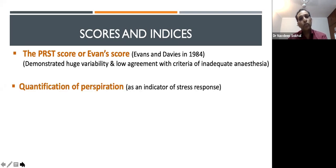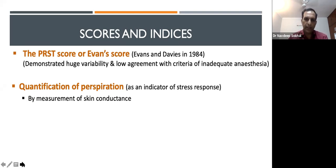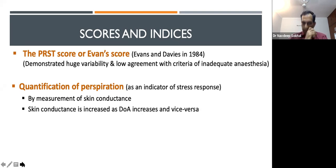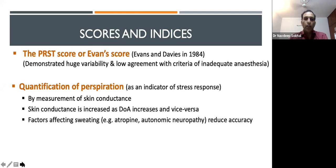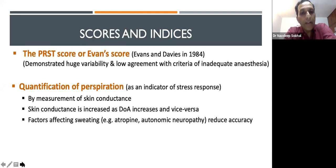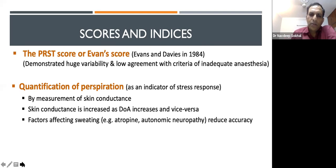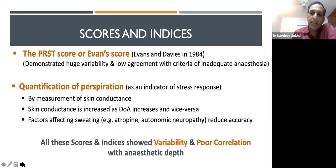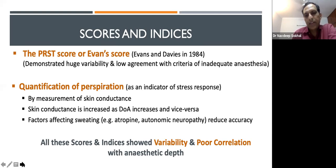Another index is quantification of perspiration — skin conductance. Skin conductance increases as anesthetic depth increases and vice versa, as it is an indicator of the stress response. However, factors that affect sweating, like atropine or autonomic neuropathy, reduce the accuracy of this score. Ultimately, all these scores and indices show variability and poor correlation with anesthetic depth.